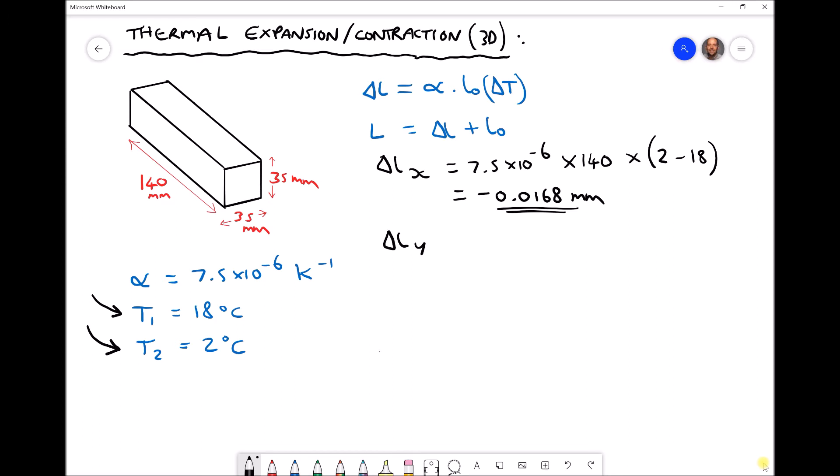Let's repeat for the y direction. We have 7.5 times 10 to the minus 6, this time multiplied by 35, and once again multiplied by our minus 16, giving us a change in length in the y direction equal to minus 0.0042 millimeters. And our change in length in the z direction is going to be exactly the same as in the y direction because we have a square cross section.